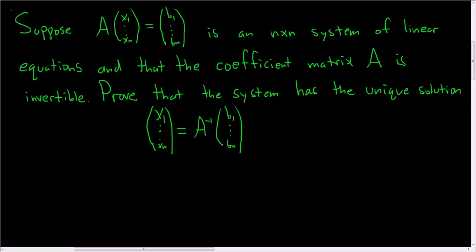So we have an n by n system of linear equations, basically n equations with n variables, represented by this matrix equation here. And we're assuming that the coefficient matrix, that's A, is invertible. And in this problem, we're being asked to prove that the system has the following unique solution.